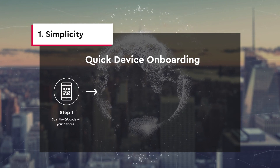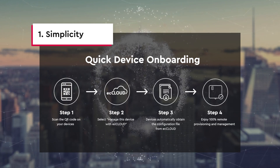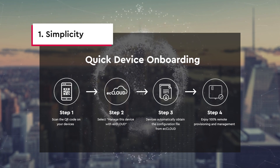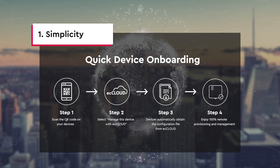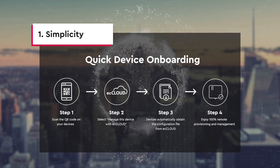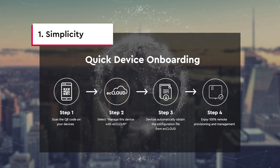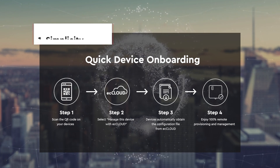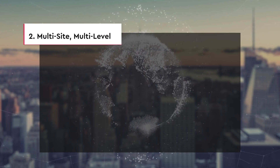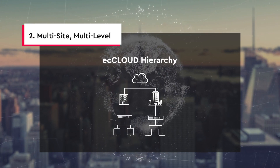With EC Cloud, simply register the device by QR code scanning or by entering its serial number and MAC address. Your network can be up in a minute, and it's easy to be managed by an IT team member from any location. Second: multi-site, multi-level management.